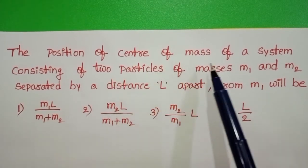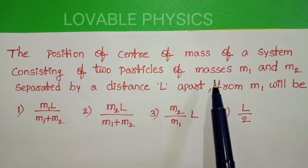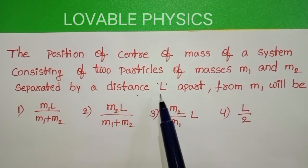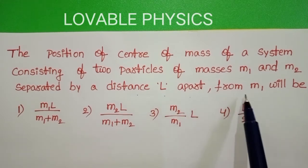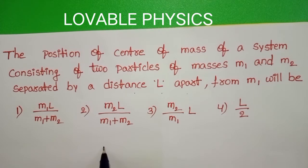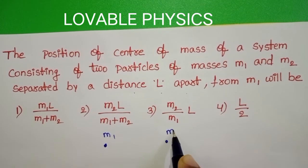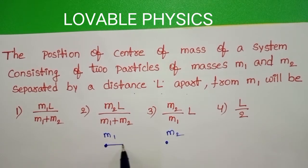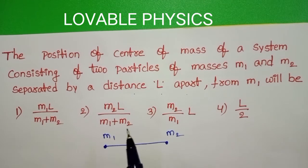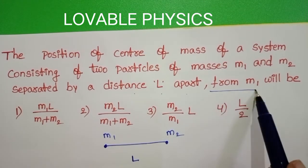The position of center of mass of a system consisting of two particles of masses M1 and M2, separated by a distance L apart from M1, will be determined. In the given question, two masses M1 and M2 are separated by a distance L. We have to find out the position of center of mass from M1.